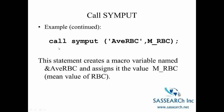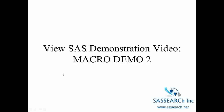In summary, this statement created a macro variable named &avRBC and assigned it the value of M_RBC, which was the mean value of the RBCs. We could then make use of this global macro variable in other data steps. Now view the SAS demonstration video, Macro Demo 2.